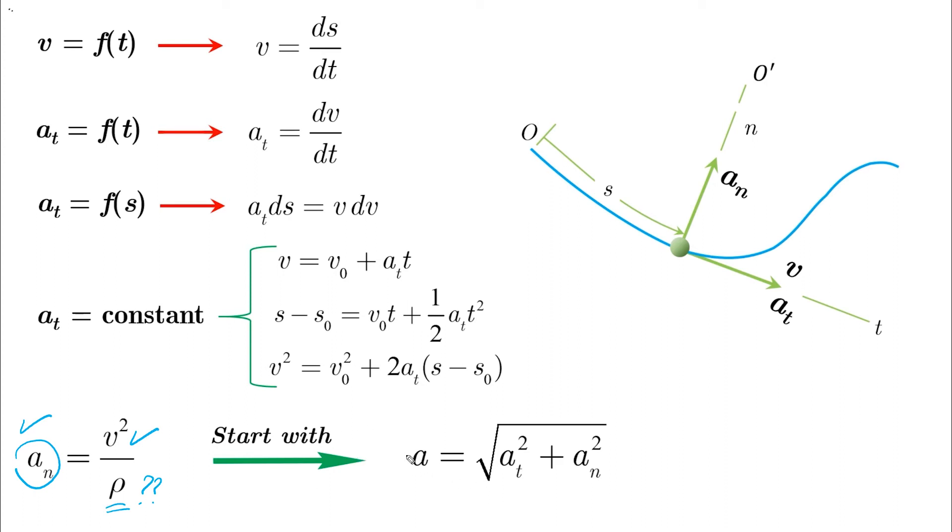So usually in the problem, A will be given for you, and you will find a way to get At from the initial conditions. You will have a way to use the constant acceleration equation to find At. And now that you have At and you have A, your only unknown will be An. So you solve for An, and you use it in the V squared over rho to find the value of rho.